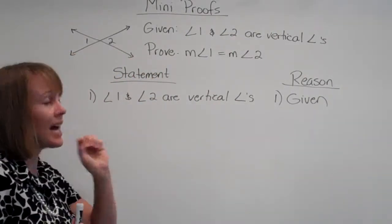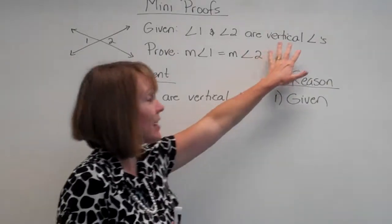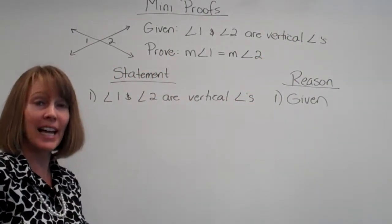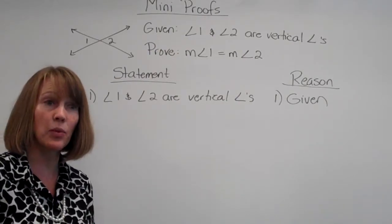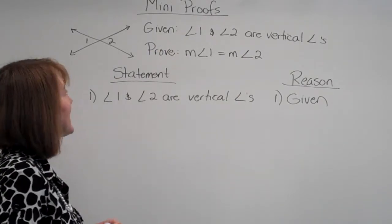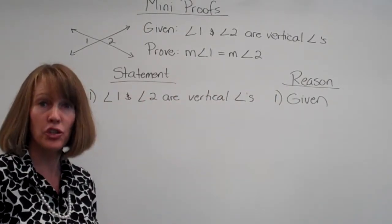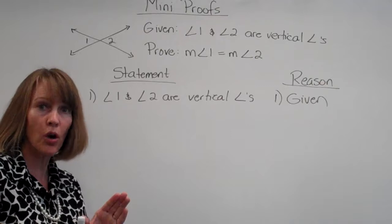All right, so let me see. We've got to use the stuff that they've given us. They've given that they're vertical angles. Well, the definition of vertical angles just says that there are two angles whose outside rays form lines. Yep, that's what they are, but that's not going to help me prove that the measures are equal.